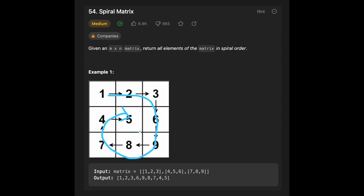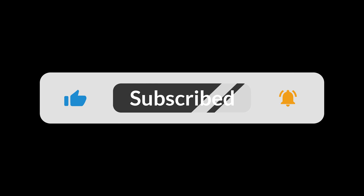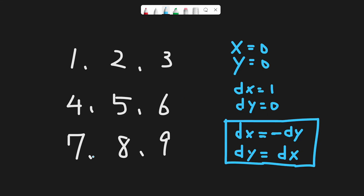Let me explain how to solve this question with this example. I initialize many variables. x and y represent the current position. dx and dy represent the direction — if dx is 1 and dy is 0, that means we go right, because every time we add dx to x and dy to y. So in that case, we add 1 to x, which means move right, and y stays 0.